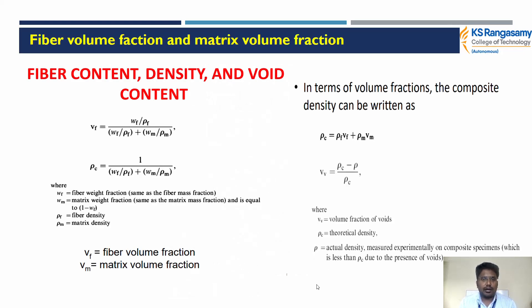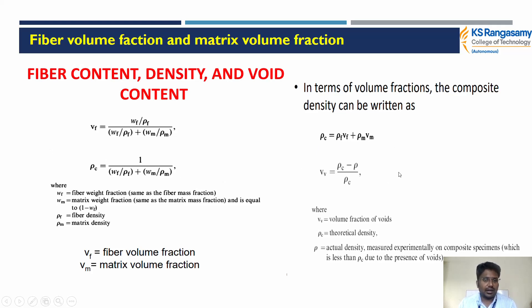The fiber volume fraction and matrix volume fraction are major and important in any type of composite. The fiber content, density, and void content formula uses: Vf equal to (Wf / ρf) divided by (Wf / ρf + Wm / ρm). Here Wf is the fiber weight fraction, Wm is the matrix weight fraction, ρf is the fiber density, and ρm is the matrix density. Composite density equals density of fiber plus density of matrix.